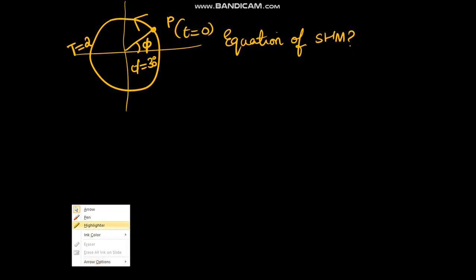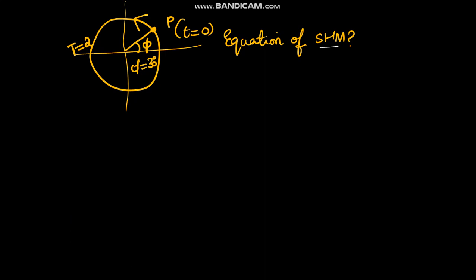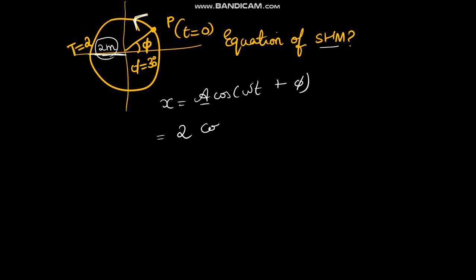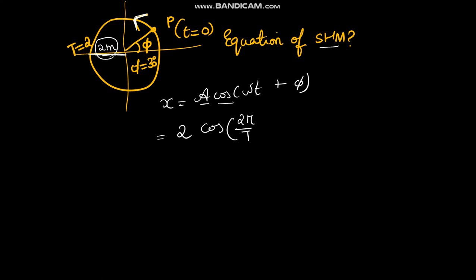Let us work out a numerical on the equation of SHM. Given it is anti-clockwise motion, for anti-clockwise it is A cos(ωt + ψ). Suppose the radius is given as 2 meters, then A = 2. So the equation is 2 cos(ωt + ψ). Omega is 2π/T. The phase angle ψ is 30°, which is π/6. The time period is 2 seconds.